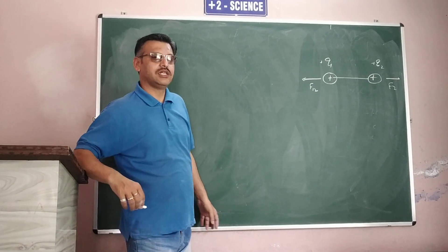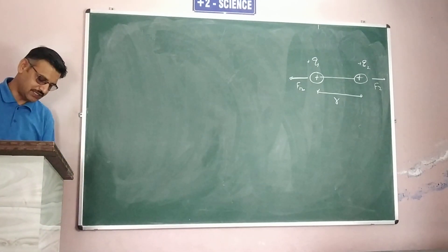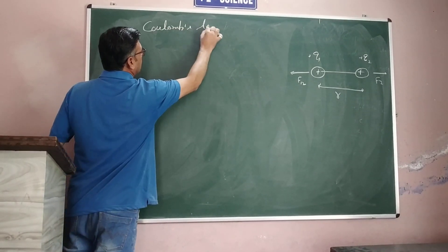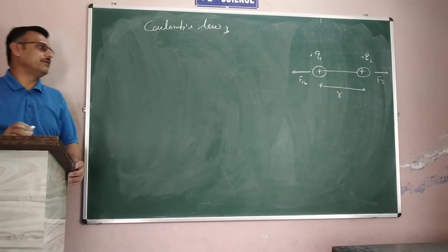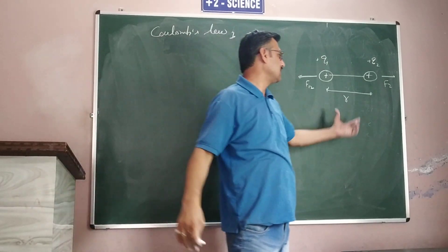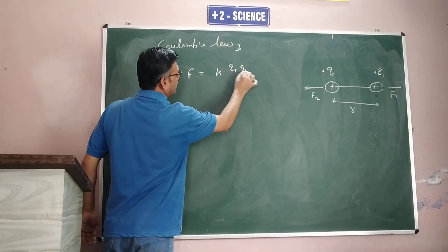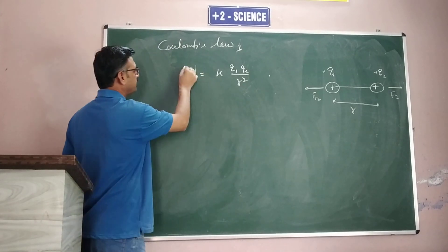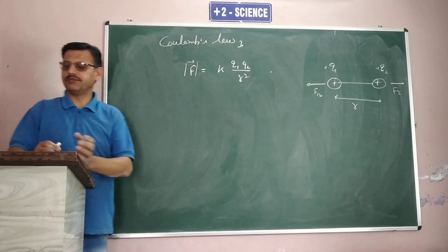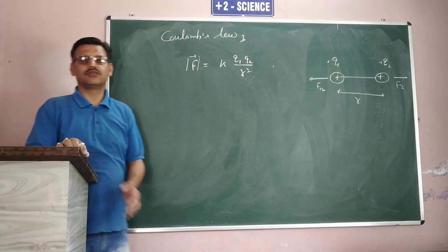What will be the magnitude of this force if the distance between these two charges is R? The scientist known as Coulomb gave a formula to find out the force between these two charges, which are separated by distance R. This mathematical formula involves Q1, Q2, and R, and this relation is known as Coulomb's law — the most important formula of this chapter.